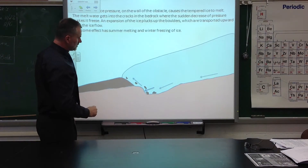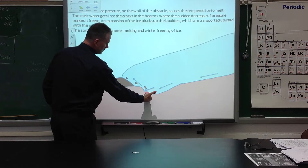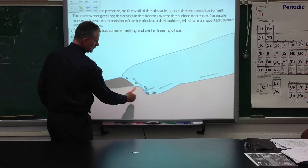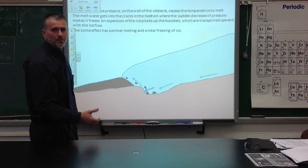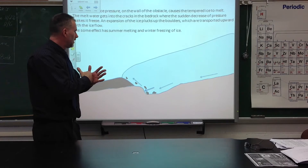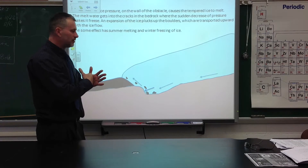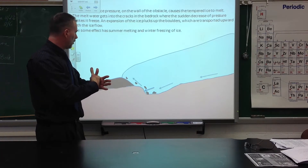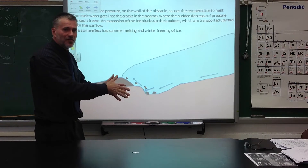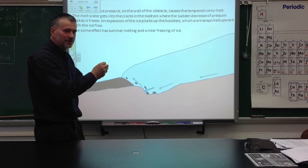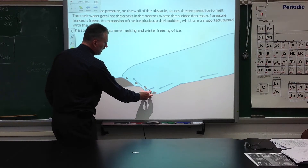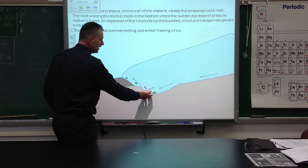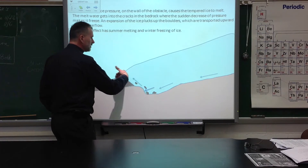We can imagine the situation where ice approaches and just scrapes this obstacle. As well, there could be some plucking going on when the temperate glacier presses on an obstacle and becomes water. The water runs into cracks, and when it decompresses it becomes ice again. Those chunks of rocks freeze to the bottom of the glacier and can be carried onto Long Island.